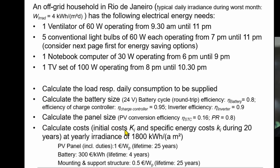We calculate with an irradiance of 1,800 kilowatt-hours per square meter per year. PV panels are priced at 1 euro per watt — relatively expensive, but local market prices include duties and so on, so it's realistic — with a lifetime of 25 years. The battery, however, has a lifetime of only four years due to the elevated temperatures there.